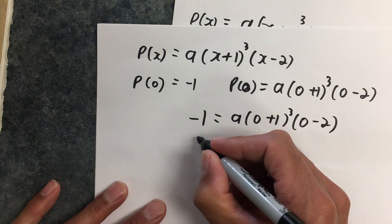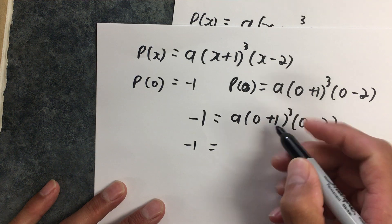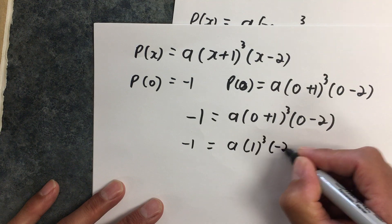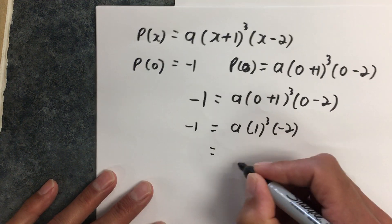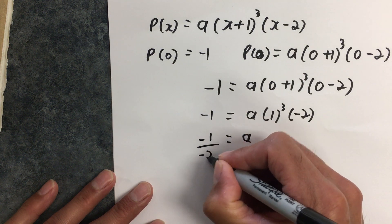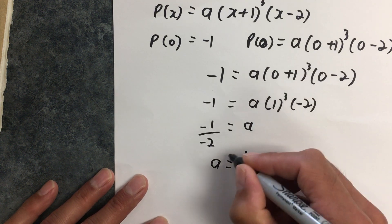I can now do a little bit of math to this. -1 is equal to—that's just 1³—times negative 2. Or a is equal to -1 over -2, which means that a is equal to 1/2.